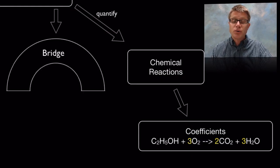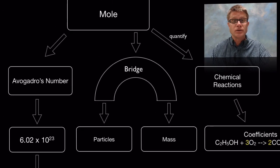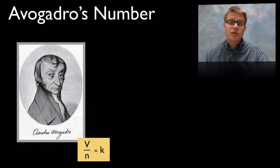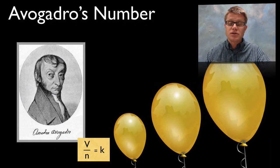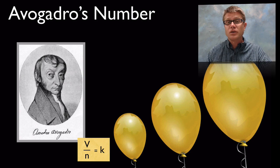The mole also serves as a bridge — most importantly, a bridge between the mass of an object and the number of particles found within that object. Where does the name come from? Avogadro was an Italian chemist who worked many years ago in the early 1800s, and he came up with Avogadro's law.